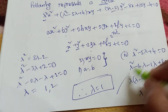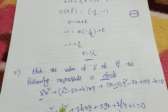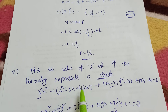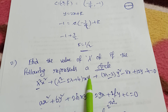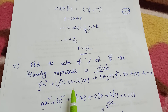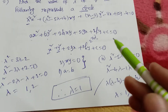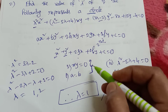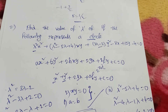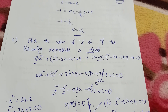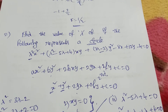So the final answer is λ = 1. Remember: in circle form, the h term must be 0 and coefficients of x² and y² must be equal — these two conditions are very important. Thank you for watching my channel.